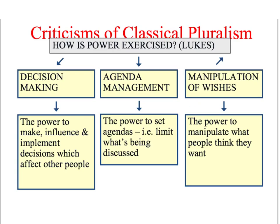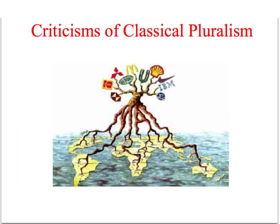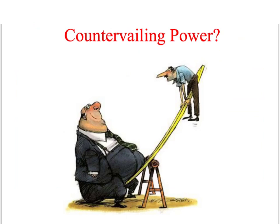In a globalised economy, classical pluralism also seems very dated. In the past, when there were stricter controls on the free movement of capital, there was much more potential for trade unions and other pressure groups to exert power over the state and act as a countervailing force to big business. But Marxists would argue that globalisation has concentrated so much economic power in the hands of transnational corporations and big investment banks that they now have the economic resources to overwhelm the political process and cancel out the interests of other groups.